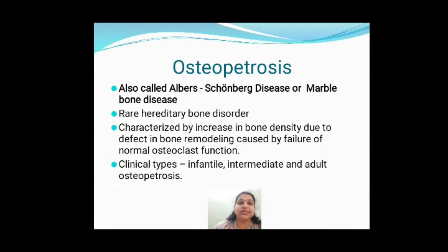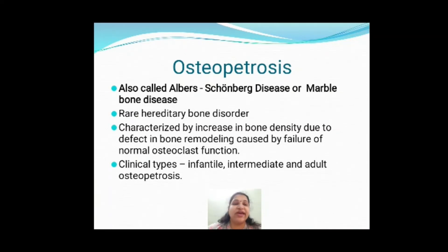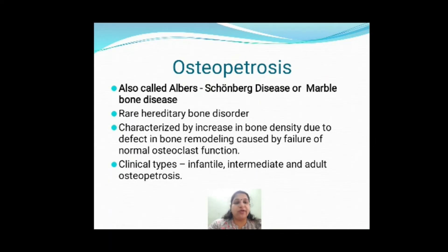Osteopetrosis is another important condition in genetic diseases of bone. It is also called marble bone disease or Albers-Schönberg disease. It is a rare hereditary bone disorder in which there is an increase in bone density due to defect in bone remodeling caused by failure of normal osteoclast function. Bone formation is completely normal — there is continuous bone formation — but what is defective is the osteoclast.